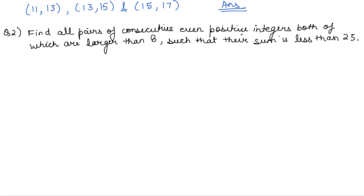Next question: Find all pairs of consecutive even positive integers, both of which are larger than 8, such that their sum is less than 25.